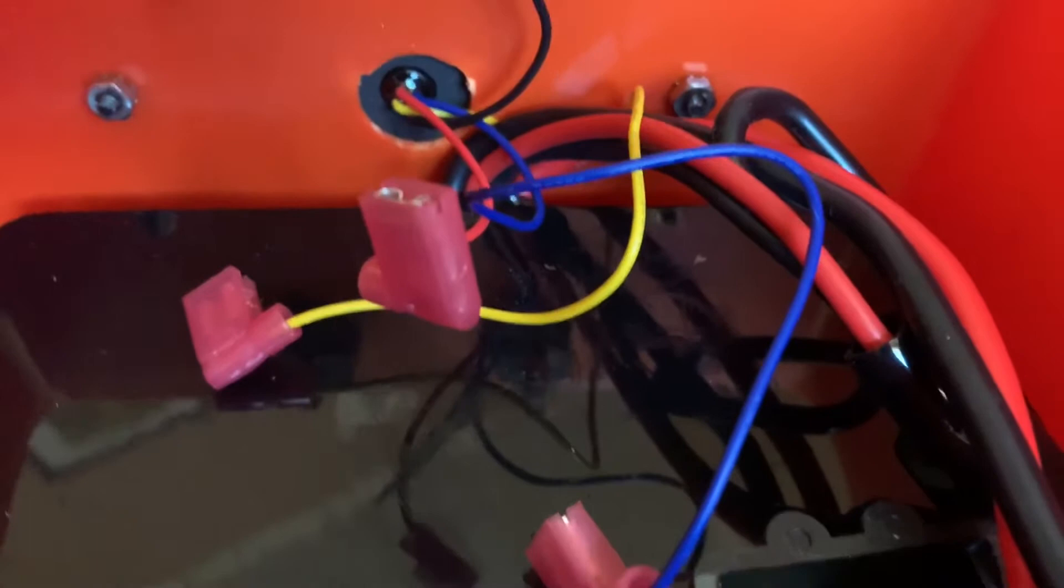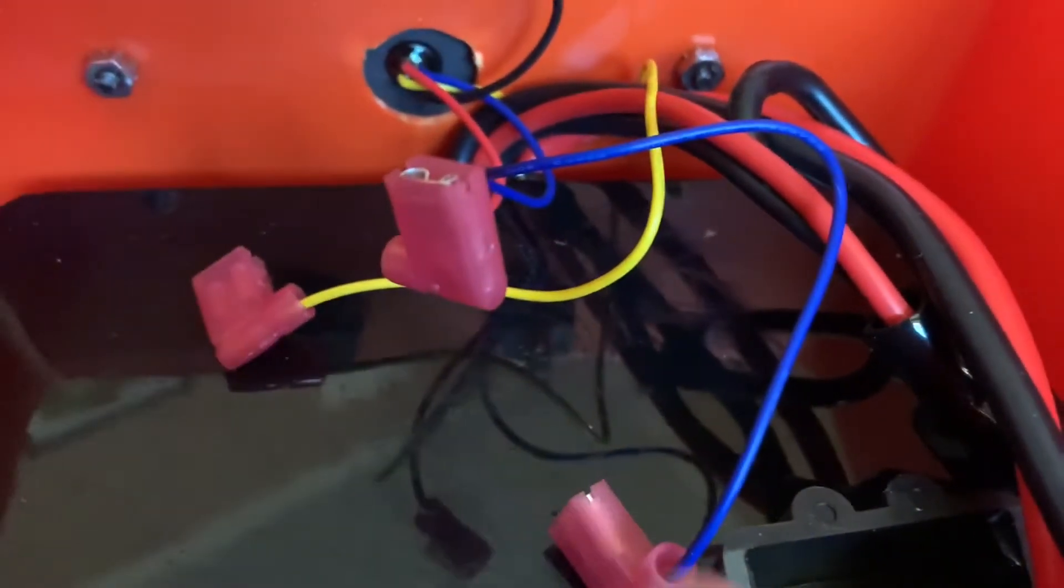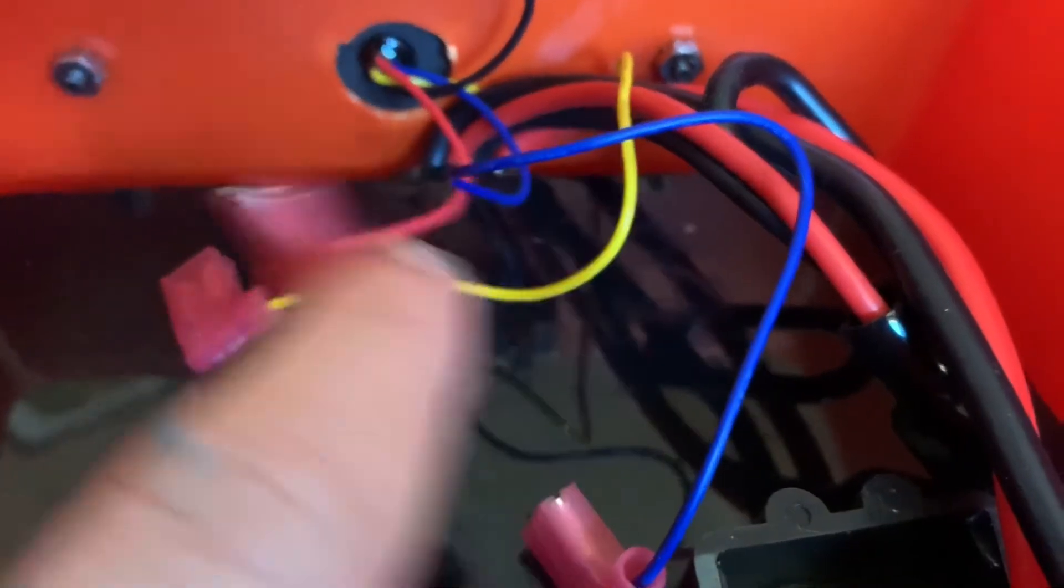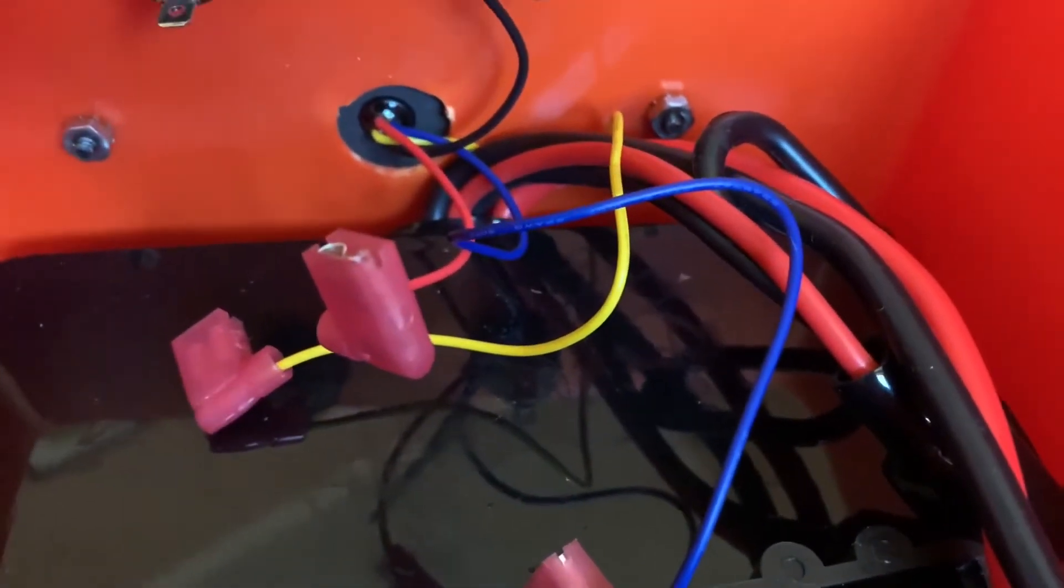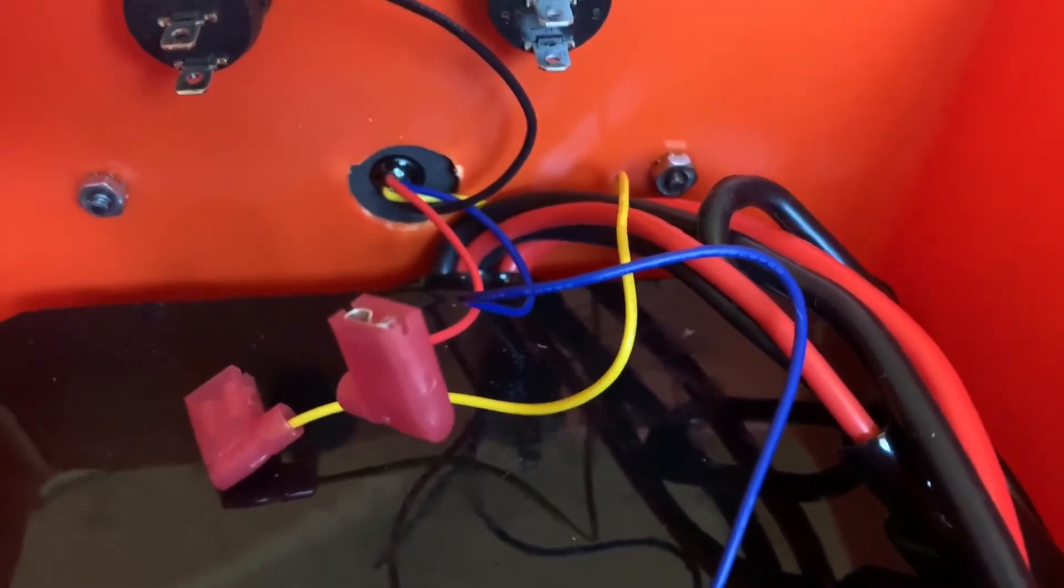You're going to clip on a flag connector to the blue light, to the blue wire, the yellow wire, and the red wire. And let's install these first because this is the easiest one to install.